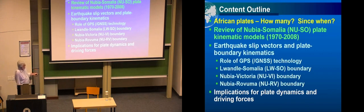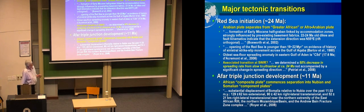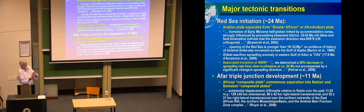I'll talk about the implications for the driving forces — what is actually driving all of this. The initiation of the Red Sea is reliably dated to about 24 million years ago, and the Red Sea is essentially the northernmost part of the greater East African rift system. From the Gulf of Aden at around 11 million years ago, we developed what is now called the Afar Triple Junction. Previously it was just Africa and Arabia rifting apart, and then afterwards Africa, Somalia, and Arabia, going anti-clockwise around the Afar region, which is the bend in the Red Sea.